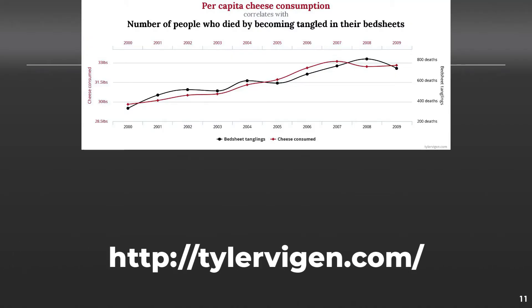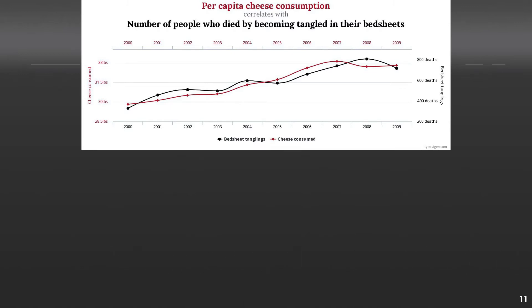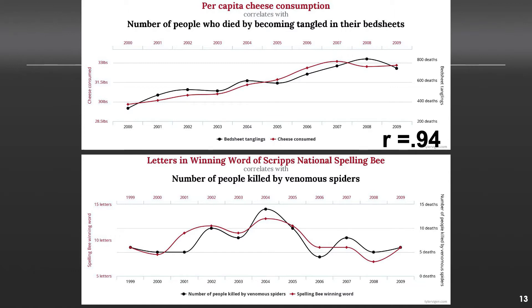There's a wonderful website I'll provide a link to that looks at correlations that exist that are super strong, and they're really funny. For example, here's one that correlates per capita cheese consumption with the number of people who died by becoming entangled in their bedsheets. That correlation is 0.94 — insanely high — but we can all agree those two are not causally connected. That's just what we call a spurious correlation. Another example: the correlation between letters in winning words in the Scripps National Spelling Bee and the number of people killed by venomous spiders is 0.81. Both are ridiculous. Just because things are associated doesn't mean they're necessarily causally related — that's a mistaken judgment.